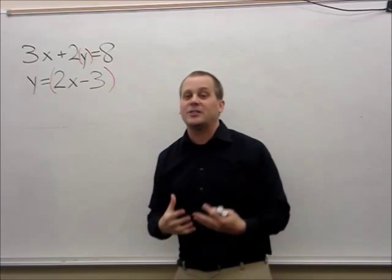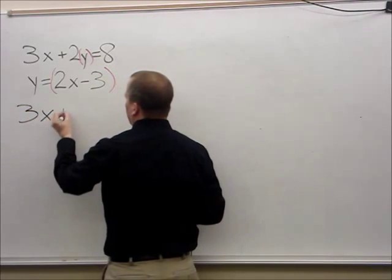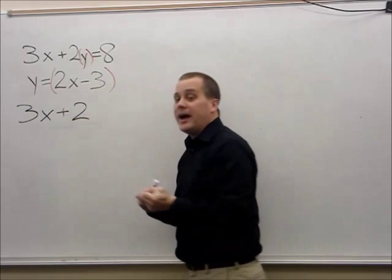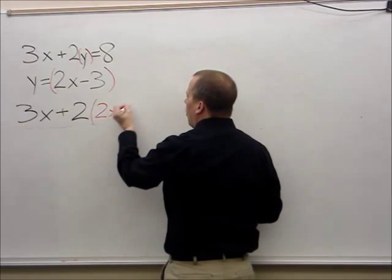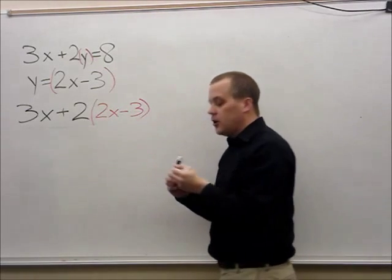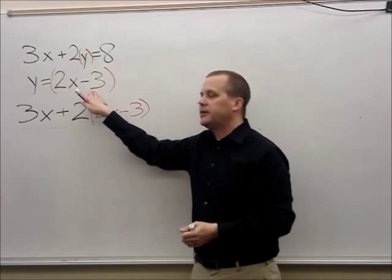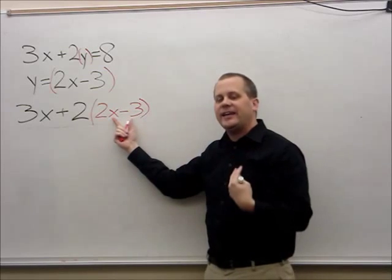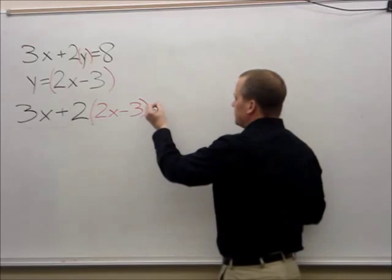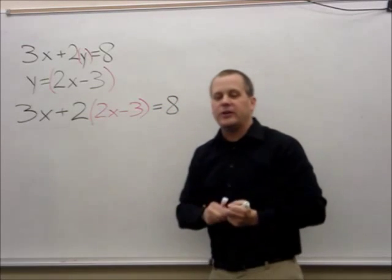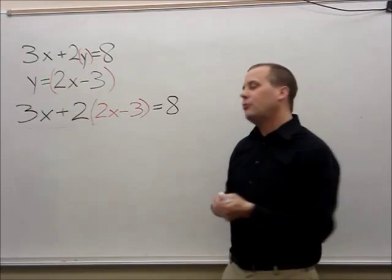I'm going to take this y out and replace it with everything I put parentheses around — just like the barbecue sauce going away and the ranch dressing coming to you. So I rewrite the equation: 3x plus 2, and after the 2 I write everything that y equaled: 2x minus 3. I take out the y and replace it with 2x minus 3, then finish with equals 8.